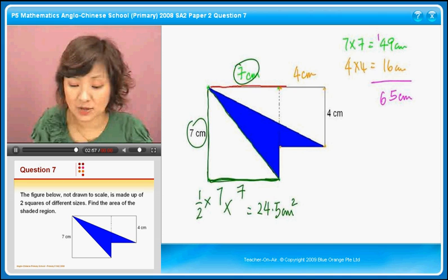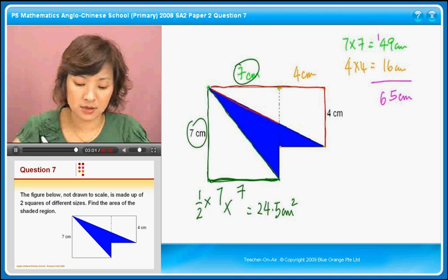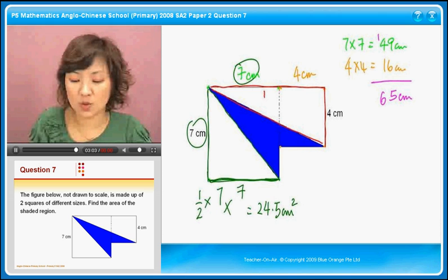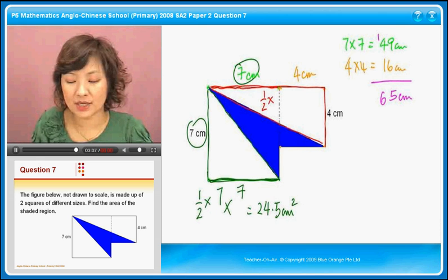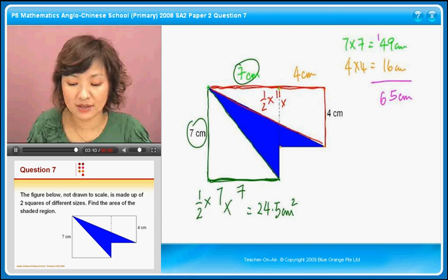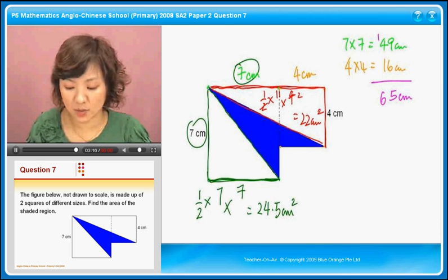Then we look at this one, this other triangle. The red one. So we have half times, what's the base? The base is 7 plus 4, that gives us 11. And this is the height, which is 4. You cancel out, you get 22 square centimetres.